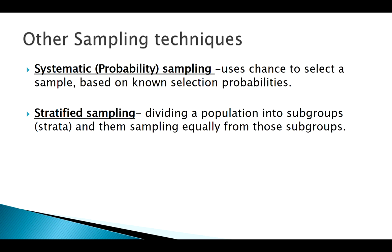If I want equal representation, I could use stratified sampling: here's a list of females in the class and a list of males. I'll randomly sample five males and five females — that makes up my entire sample. Stratified sampling is used a lot when looking at studies involving socioeconomic status, gender, and things like that.